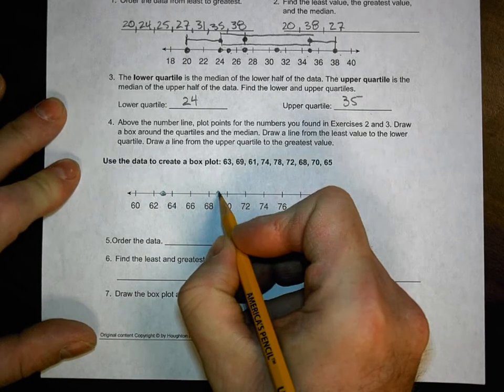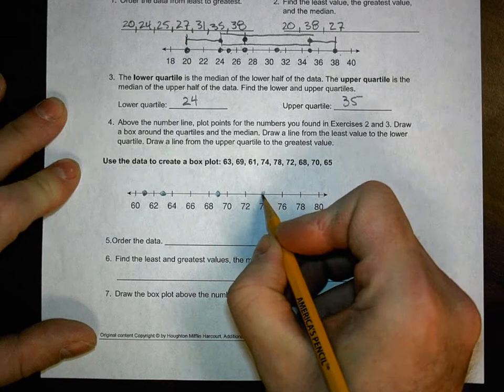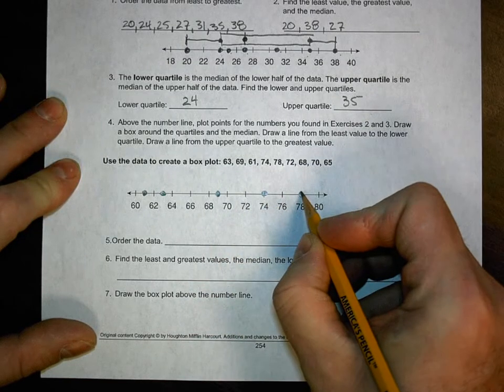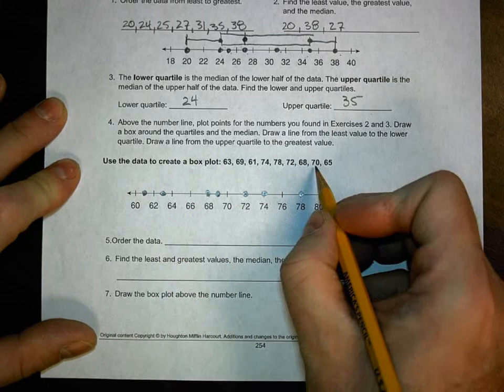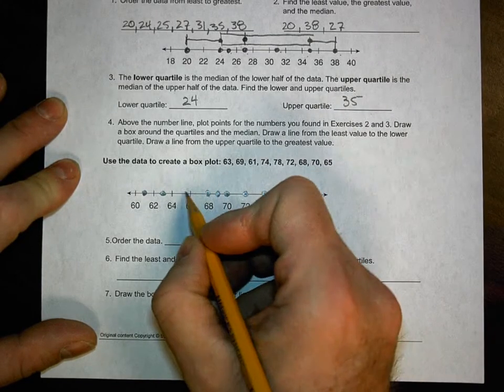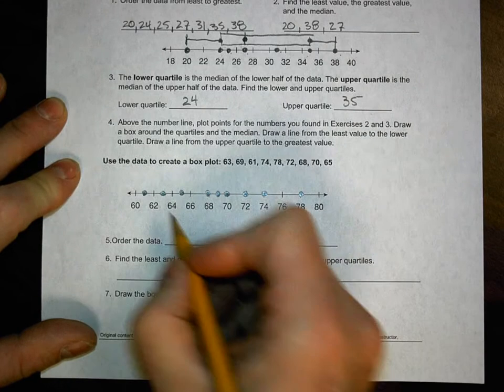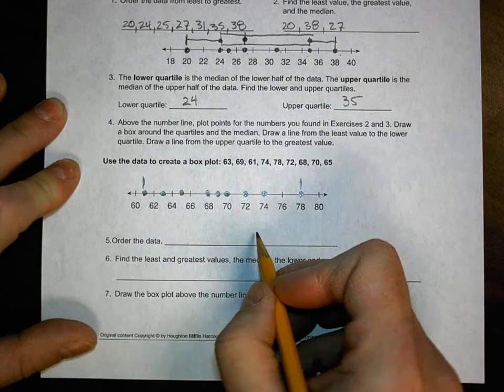63, 69, 61, 74, 78, 72, 68, 70, and 65. So I got my data done. I can do my high and my low. I can order my data.